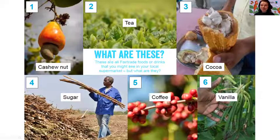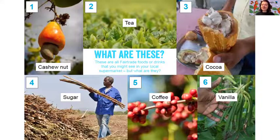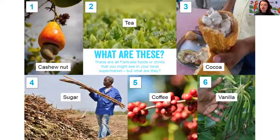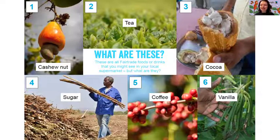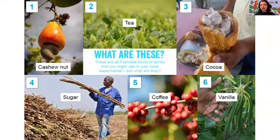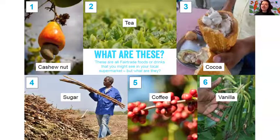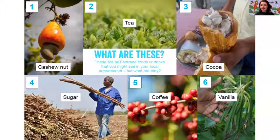Number one is a cashew nut — this is a cashew apple and the nut grows from the base of it. When you're buying a bag of cashew nuts at the supermarket, each of them comes from this beautiful cashew apple; the amount of work and care that goes into bringing that bag to the supermarket is quite incredible. Number two is tea. Number three is cocoa — the product that goes into chocolate. This is a cocoa pod broken open; inside are white sticky cocoa beans that are fermented and dried to make the cocoa beans in the chocolate we eat. Number four is sugar cane. Number five are coffee cherries — inside there are two seeds that are roasted to make the bean we're familiar with. And number six is vanilla, most commonly grown in Madagascar.